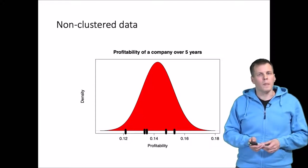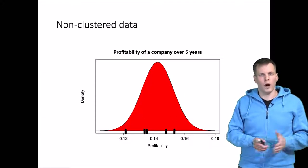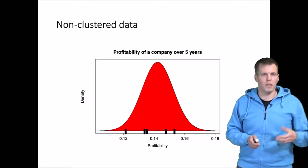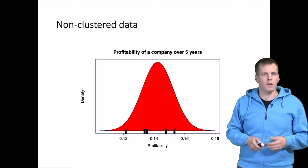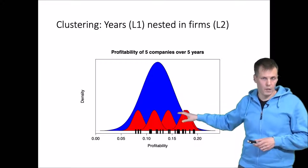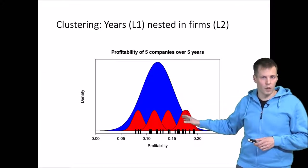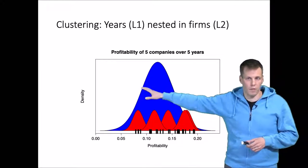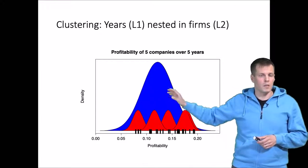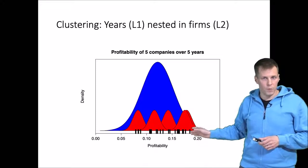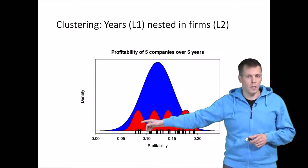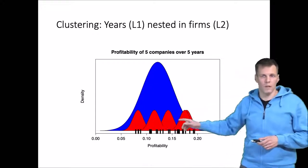That doesn't fully explain why a large dataset of profitability figures would vary, because there can also be other levels of variation. For example, there can be company-level variation. These red mounds each represent one company, all working within the same industry. This blue area represents the variation of performance of all companies within that industry. Different companies vary — their performance varies within company — but there are also variations between companies, so one company is consistently less profitable than another.